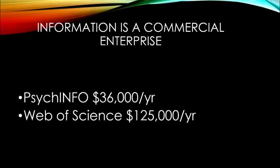Information is a commercial enterprise. The information in our databases is valuable and therefore access to those databases can be quite expensive. Our campus subscription to PsycInfo is $36,000 a year and the Web of Science is $125,000. When you are enrolled at Purdue you have access to these databases and hundreds more for free, thanks to Purdue Libraries.